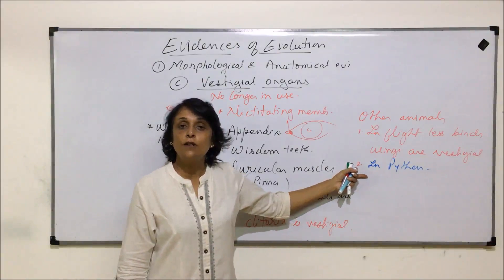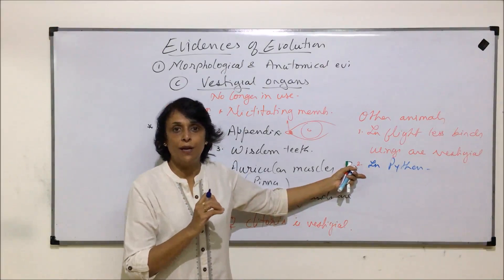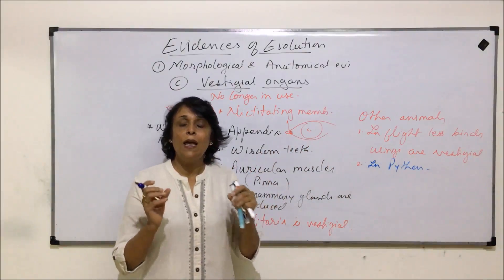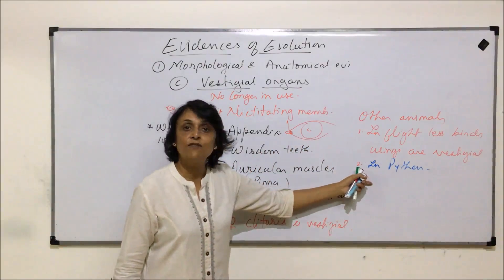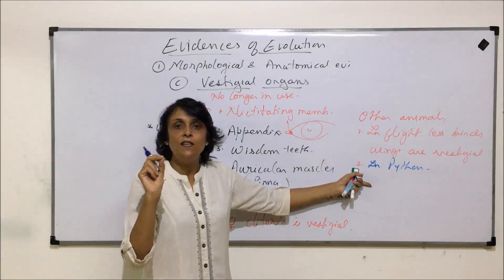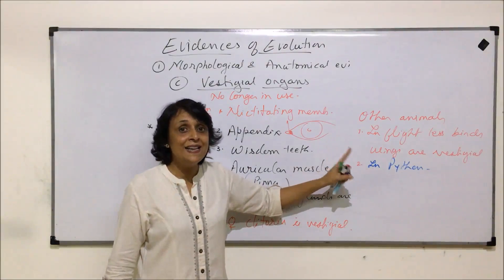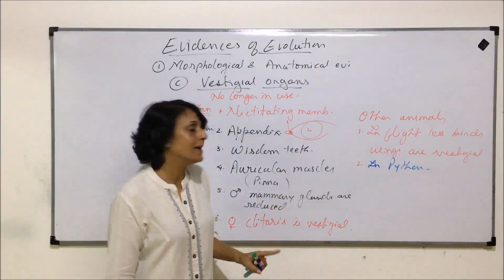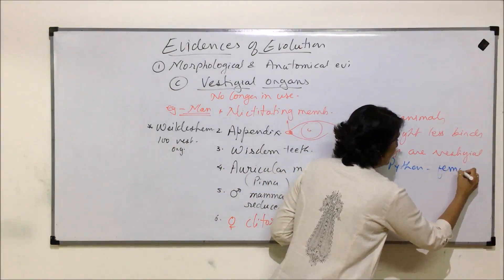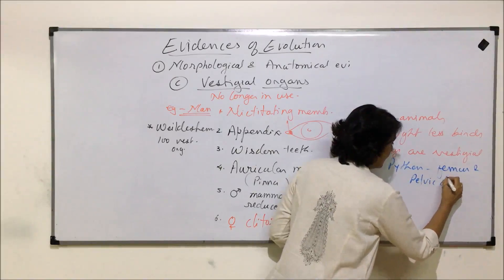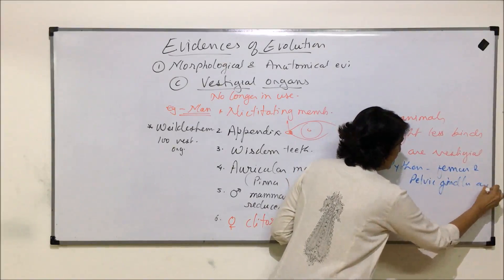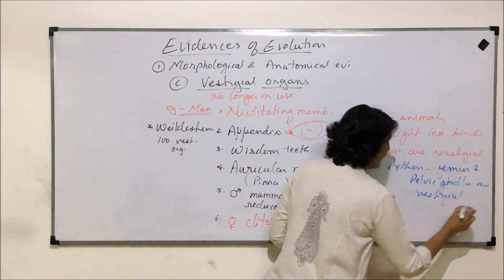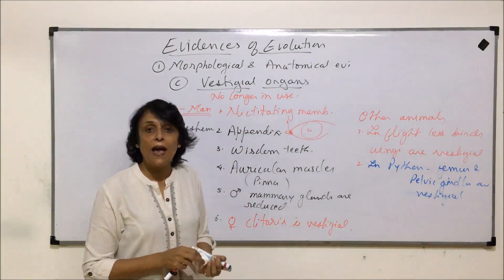Pelvic girdles are structures where the bones of the hind limb articulate to form joints, and if there is a pelvic girdle that means there are hip bones and hind limbs. In python, only remains of the pelvic girdle and femur are found in the form of a very thin bone. This indicates that the ancestors of pythons and boas were limbed organisms. So in python, the femur and pelvic girdles are rudimentary or vestigial.